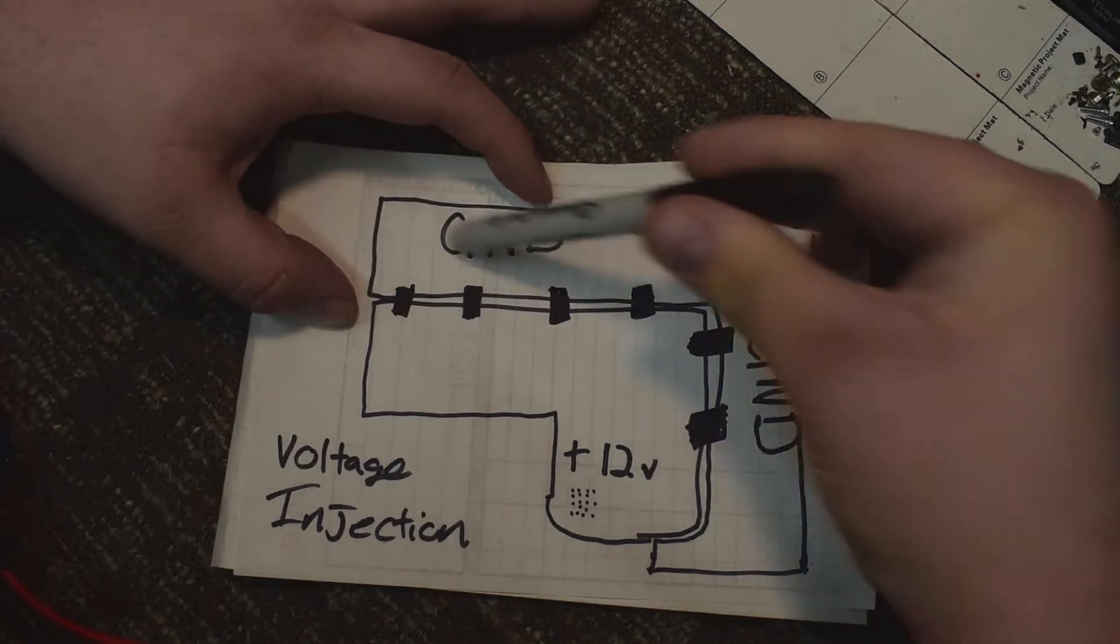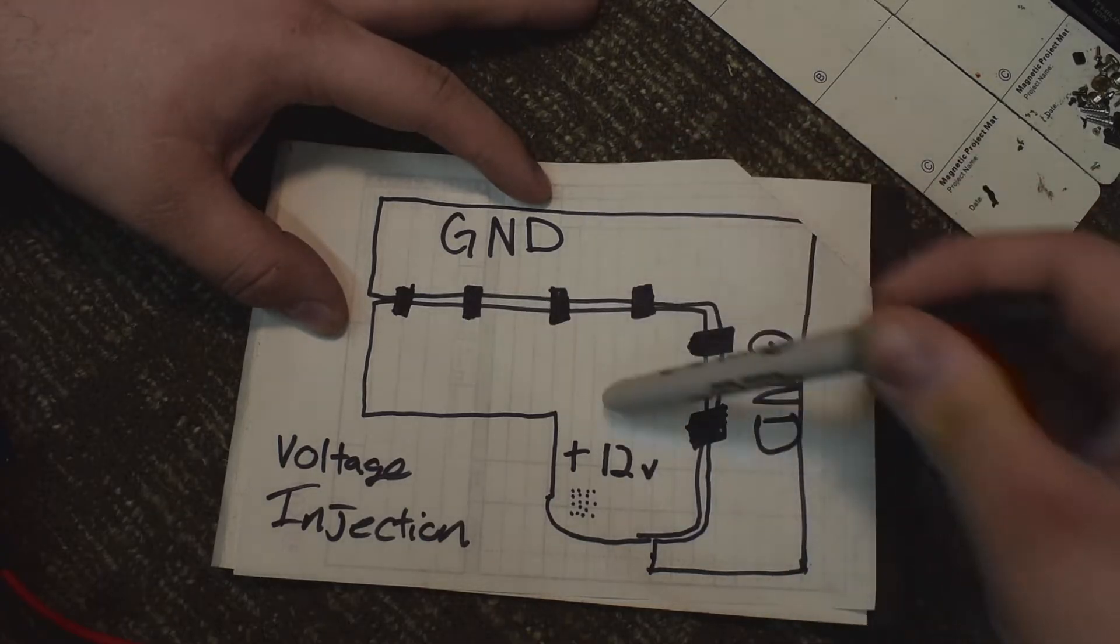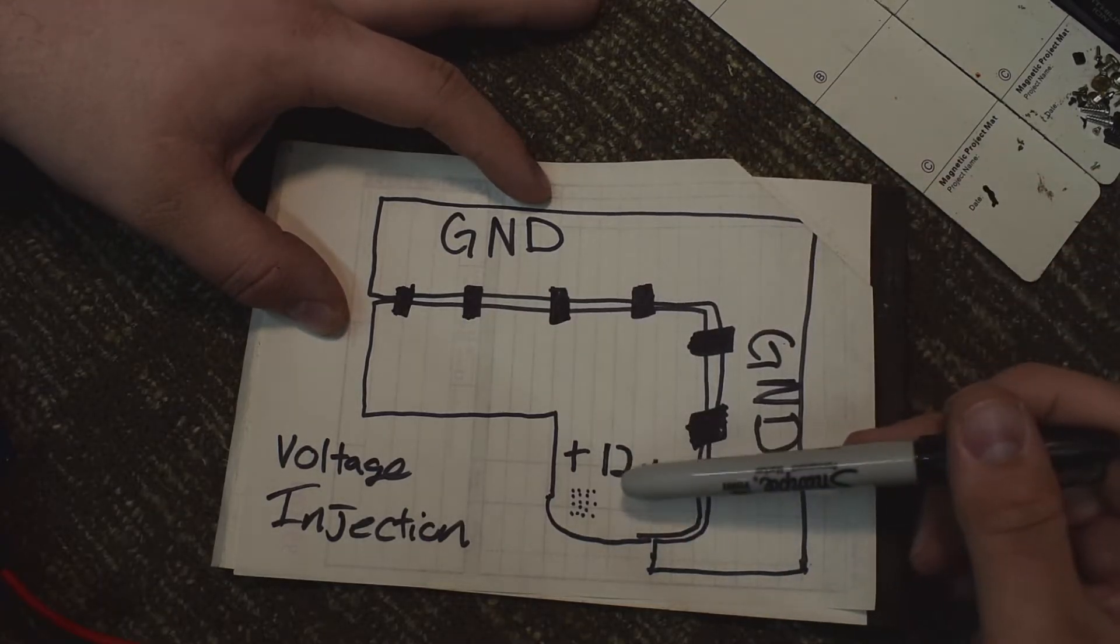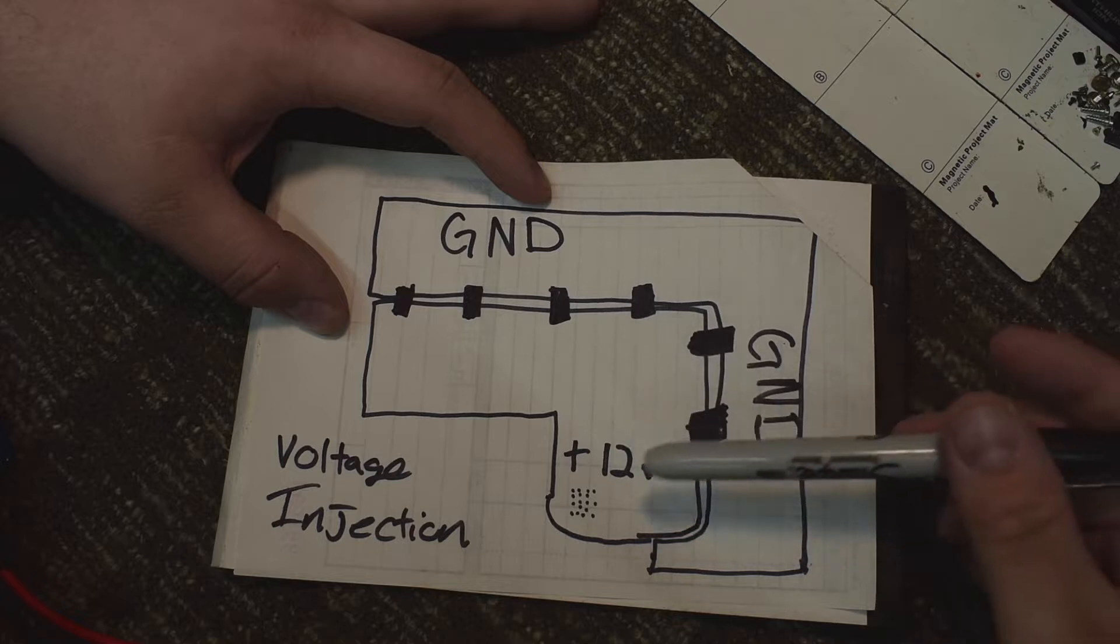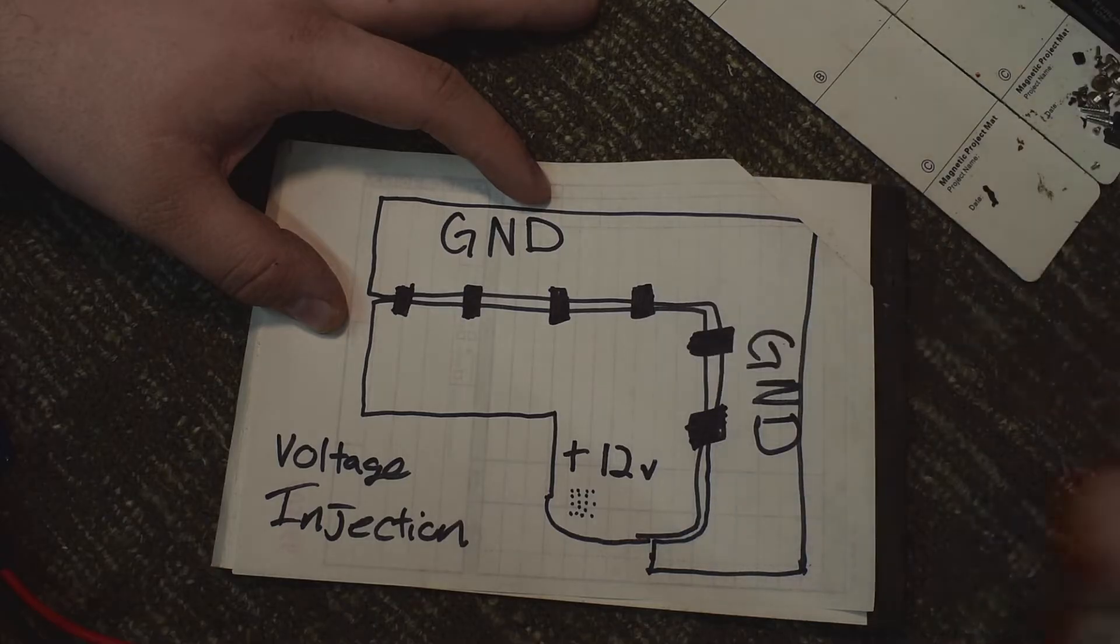So you have ground here. This is our ground plane. And then we just have our 12 volt rail. We're going to call this 12 volts. This could be a 5 volt rail, 1.8 volt rail, 3.3, whatever you want it to be. This is our 12 volt rail just for the time being.